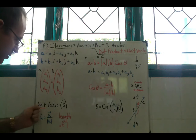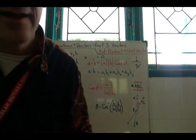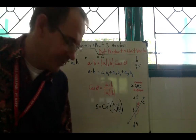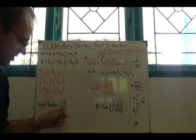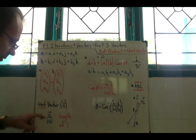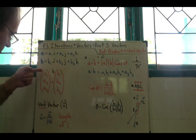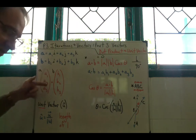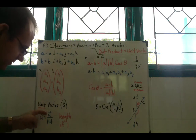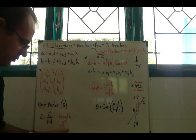Now let's look at unit vectors. The notation is a U with a little caret (^) on top — that's the carrot key on your keyboard, on number six. The unit vector equals the direction of vector U divided by its magnitude. When you divide something by itself you get one, and that's what 'unit' means — a length of one along the vector.